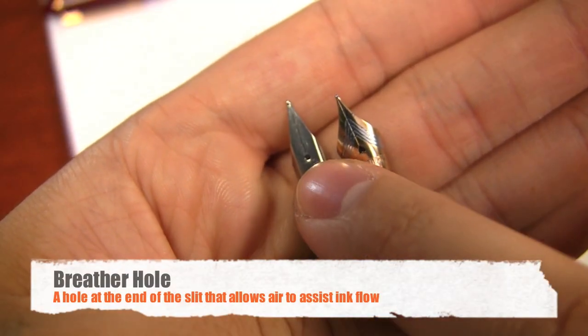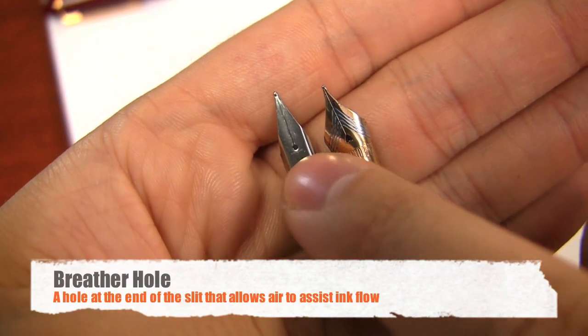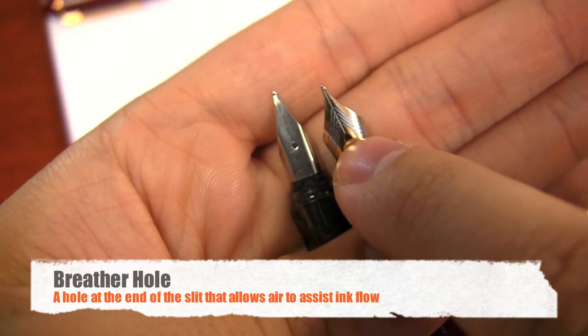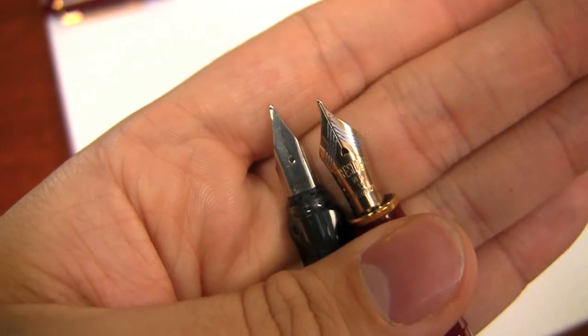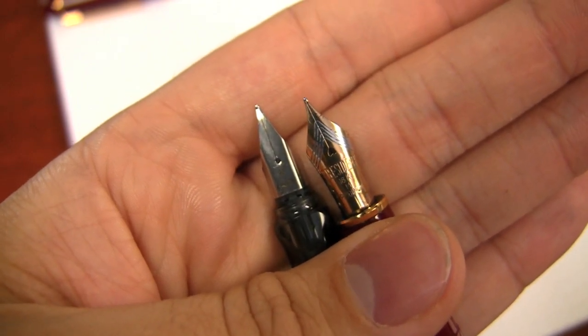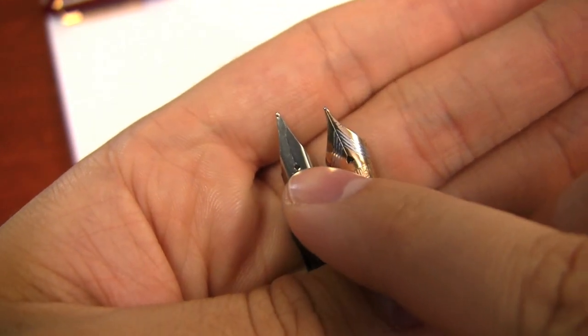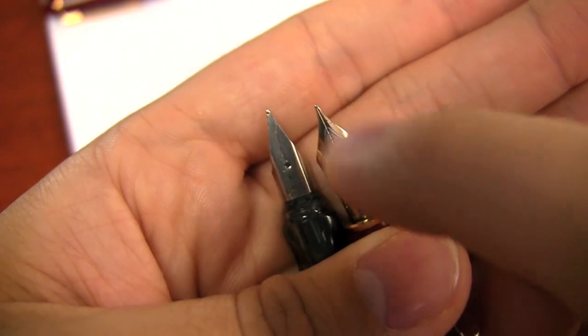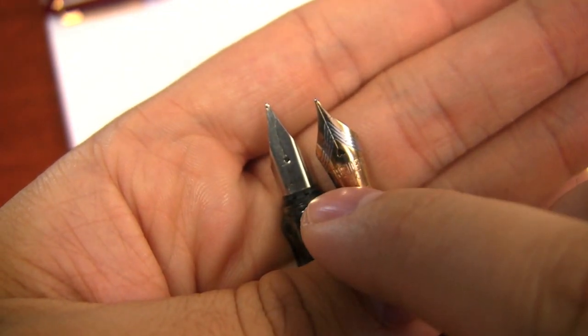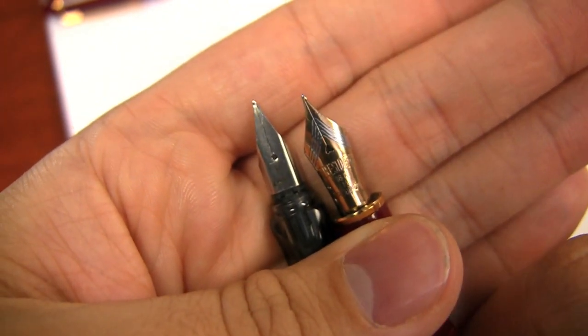The breather hole is this hole right here at the end of the slit in the middle of the nib. It can be round, it can be heart-shaped, but really the main function of this is to provide some extra air because ink can't flow without air behind it to support it.